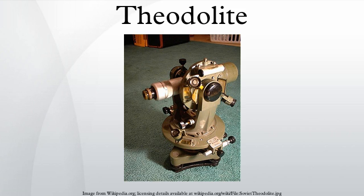A theodolite is mounted on its tripod head by means of a forced centering plate or tribrach containing four thumb screws, or in modern theodolites three, for rapid leveling. Before use, a theodolite must be precisely placed vertically above the point to be measured using a plumb bob, optical plummet, or laser plummet. The instrument is then set level using leveling footscrews and circular and more precise tubular spirit bubbles.